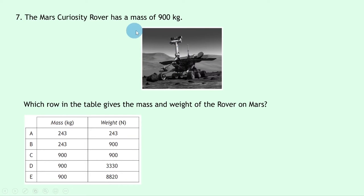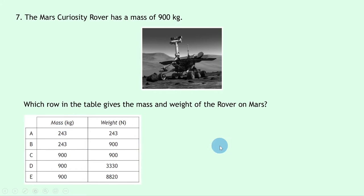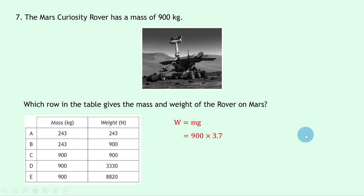Question 7: the Mars Curiosity rover has a mass of 900 kg. Mass stays the same everywhere in the universe, so it remains 900 kg on Mars — eliminating options A and B. For weight, W = mg = 900 × 3.7 (gravitational field strength on Mars from the datasheet) = 3,330 newtons. The answer is D.